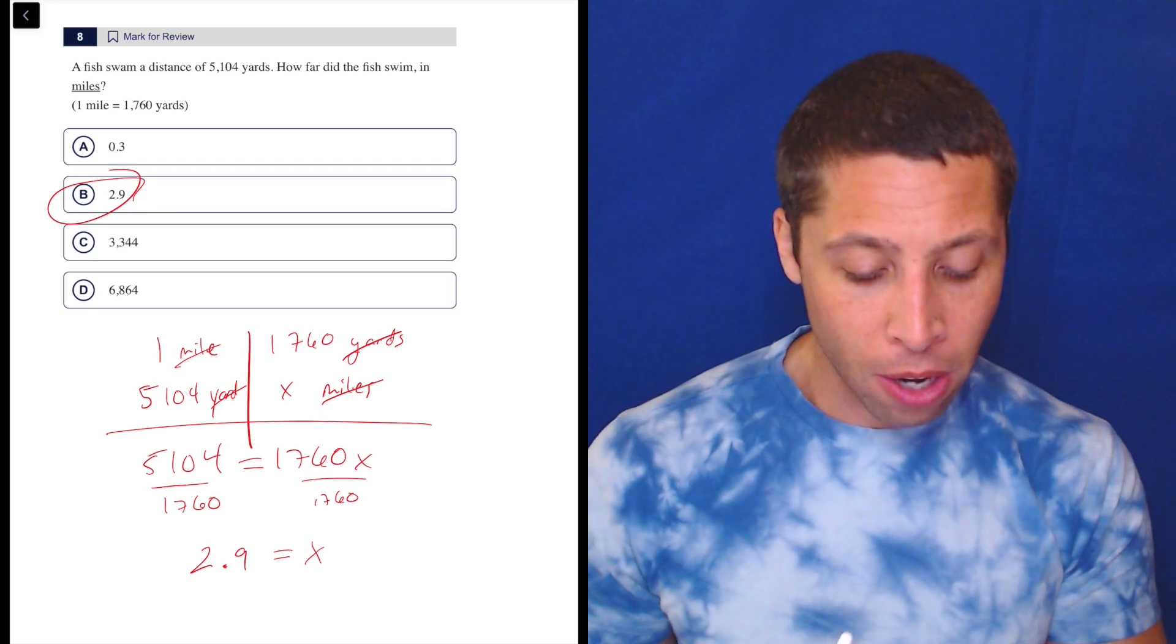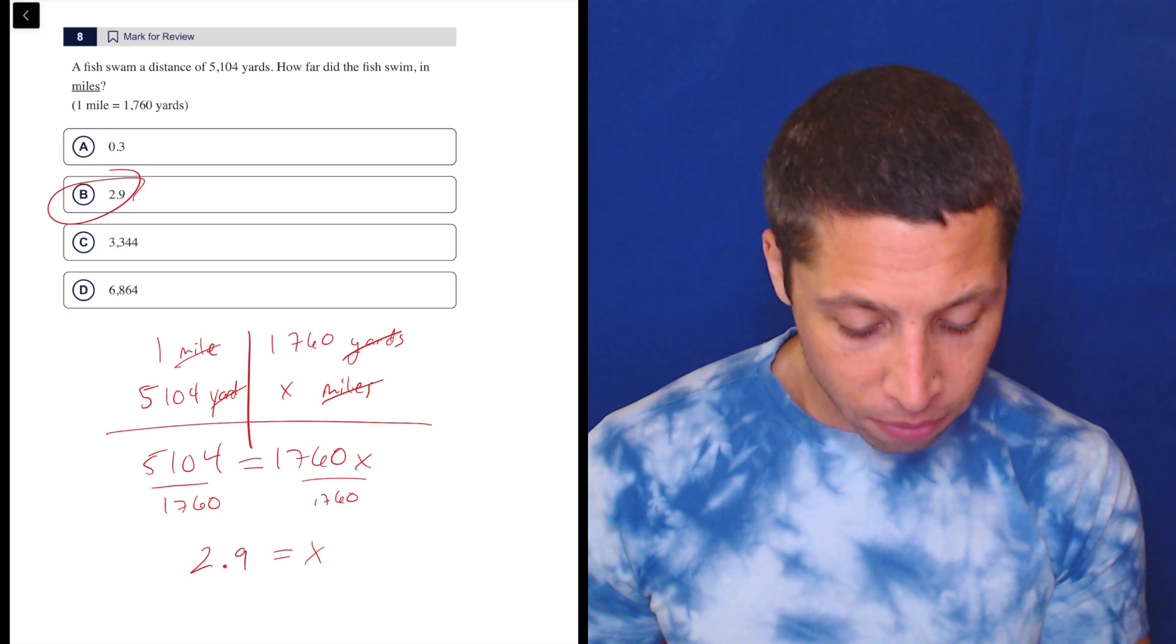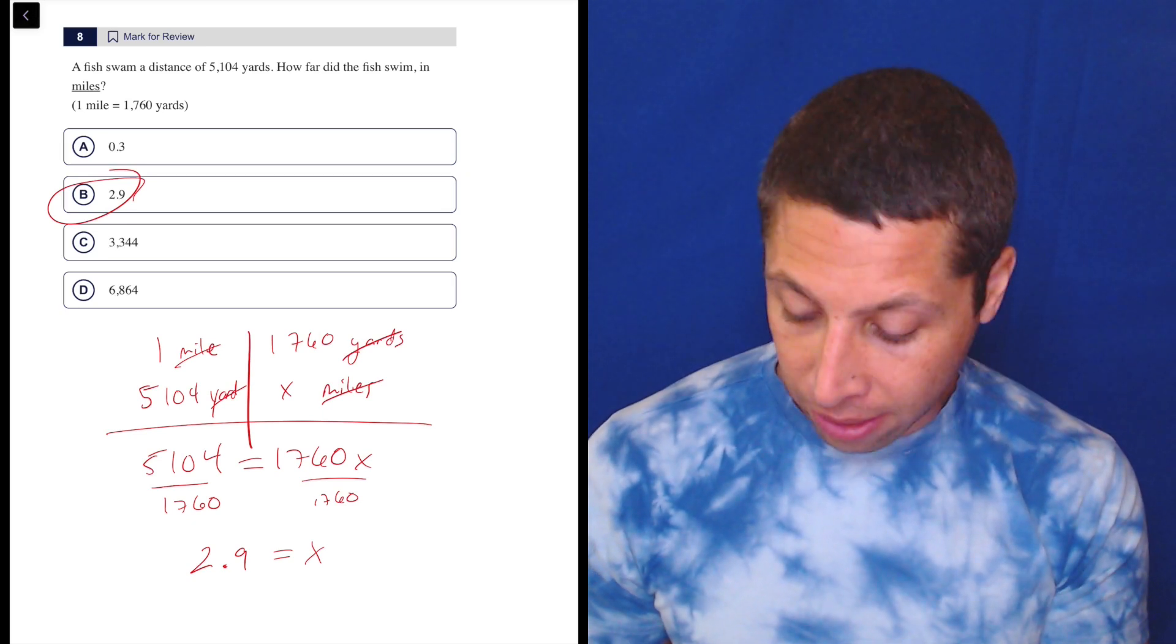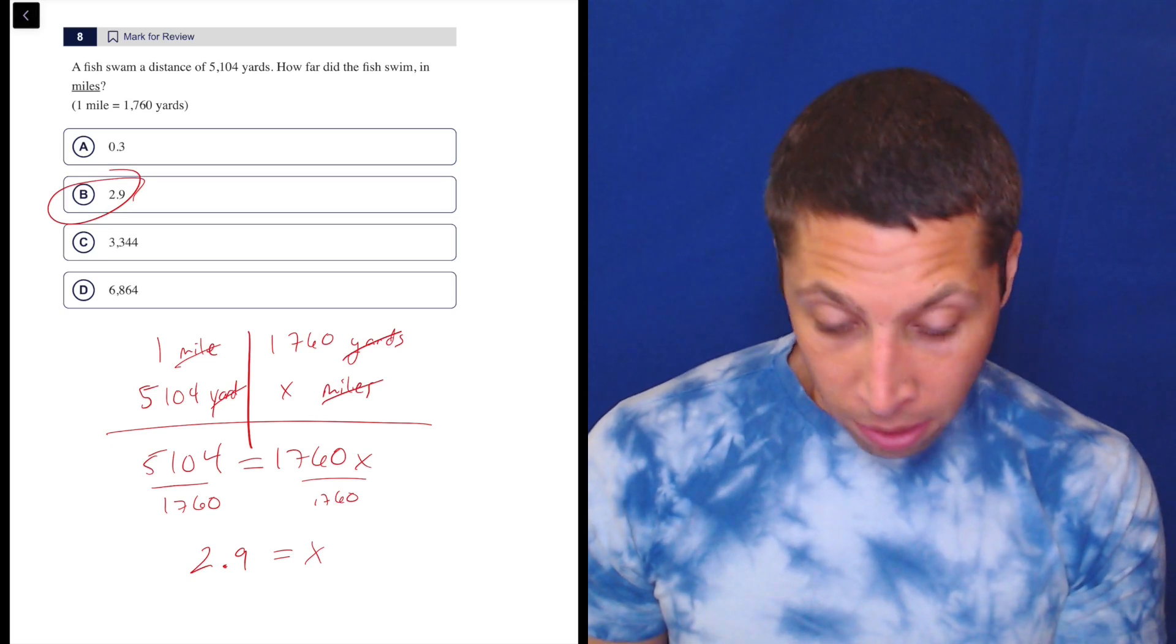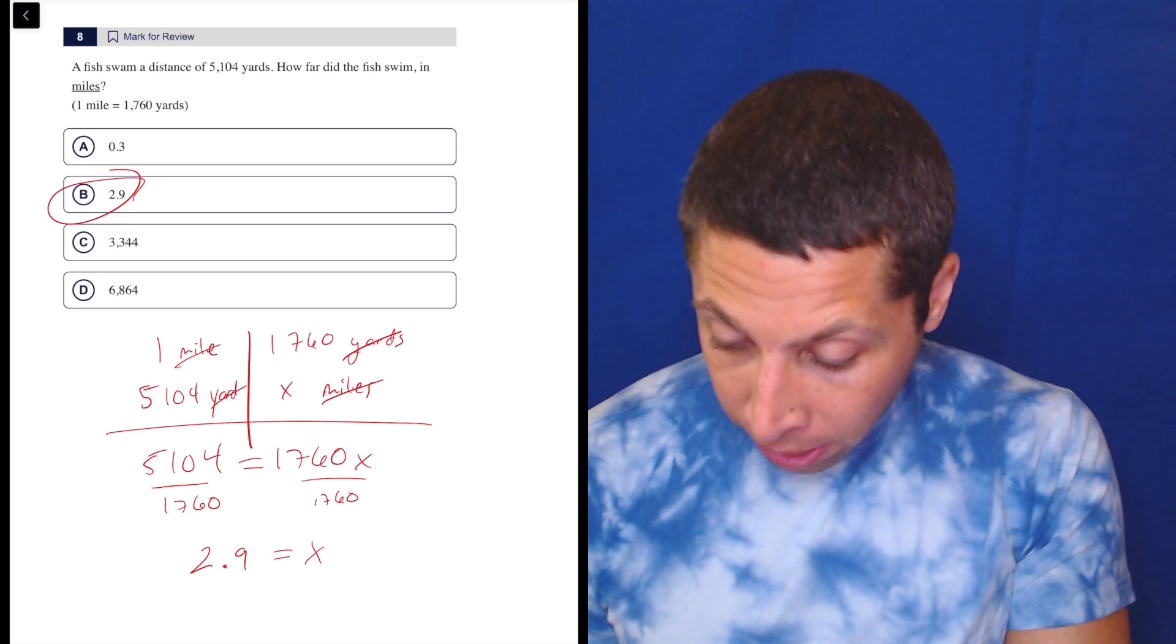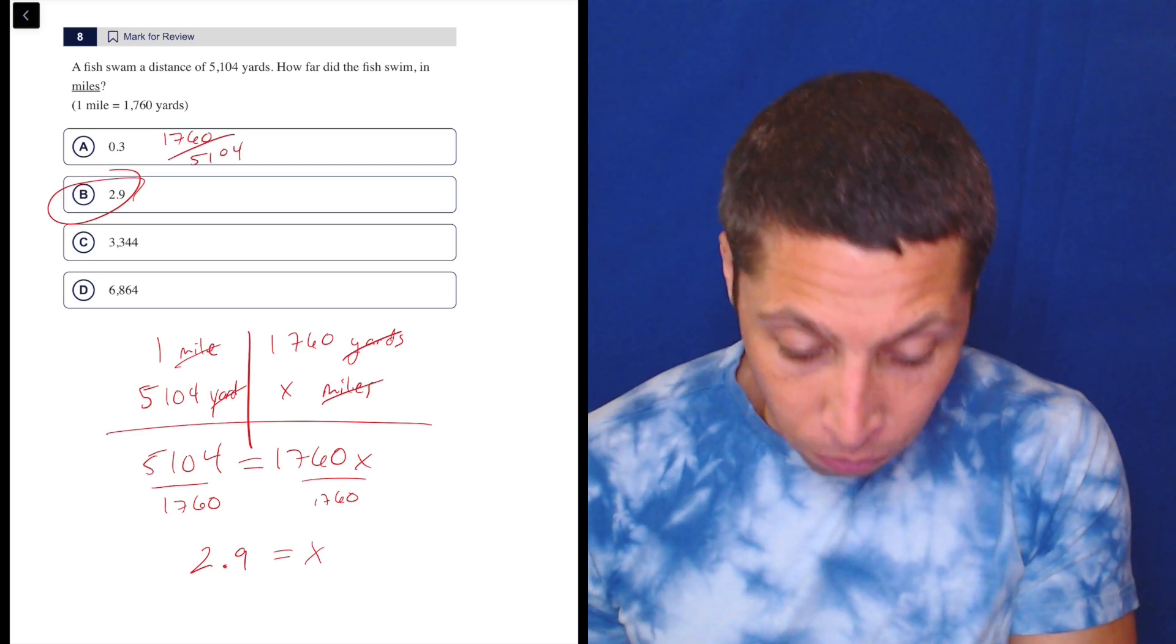Maybe if we do them backwards, we end up getting this wrong. For example, instead of dividing 5,104 by 1,760, we divide 1,760 by 5,104. We get 0.3. So here you go. 1,760 divided by 5,104.